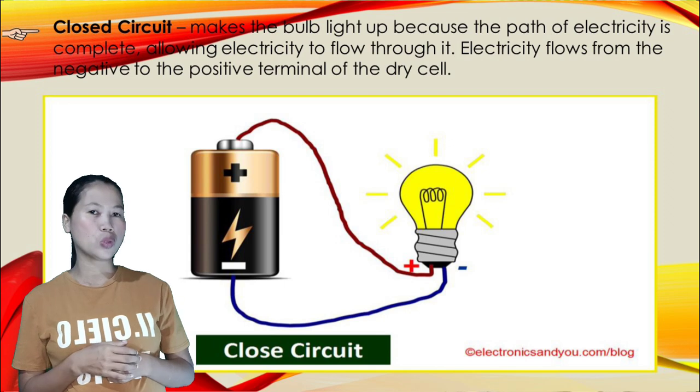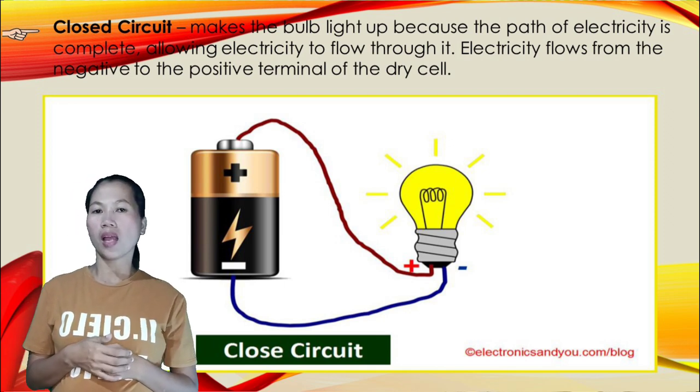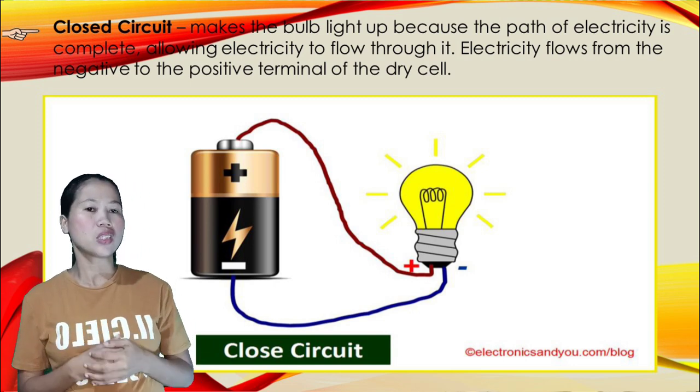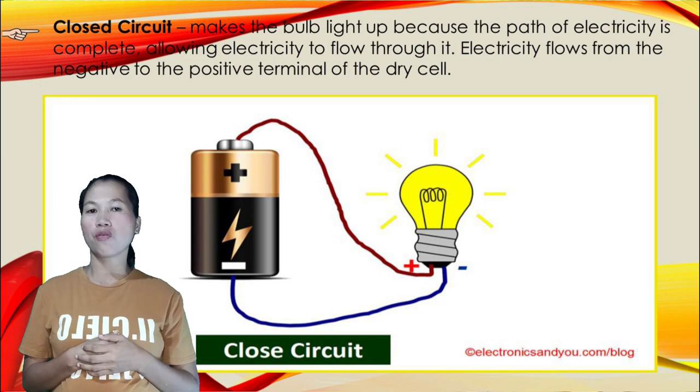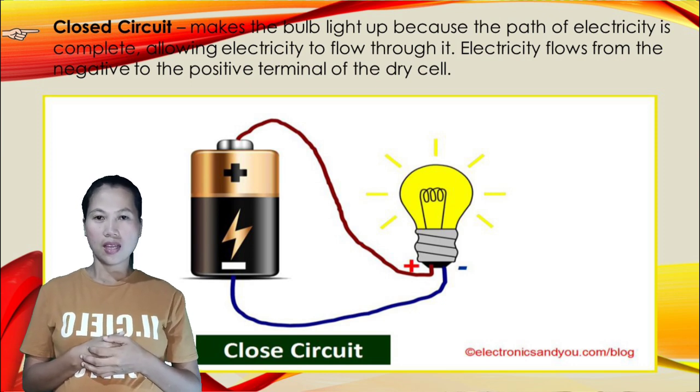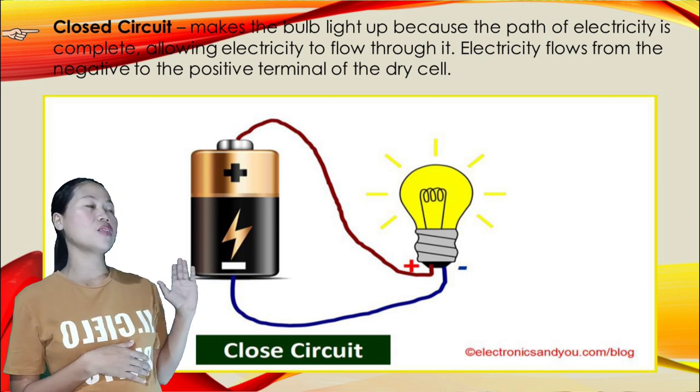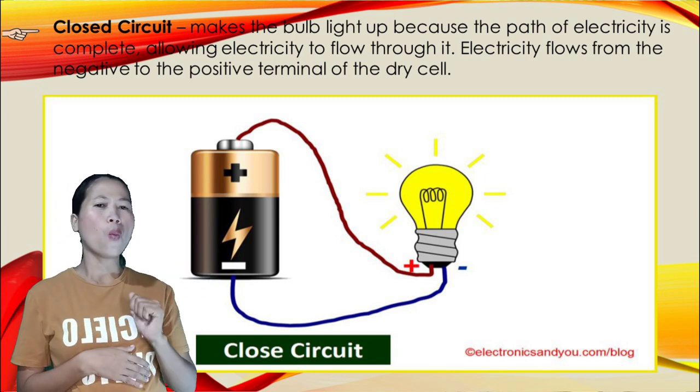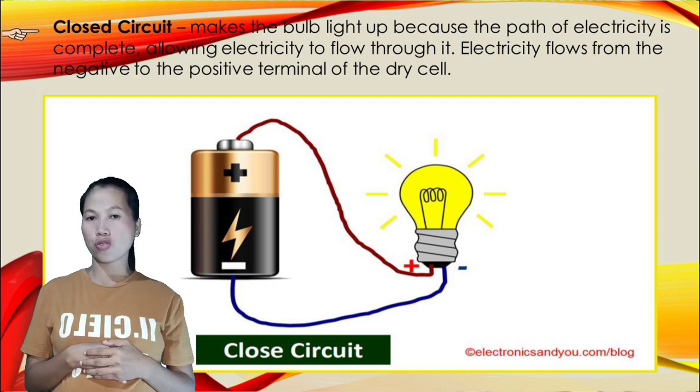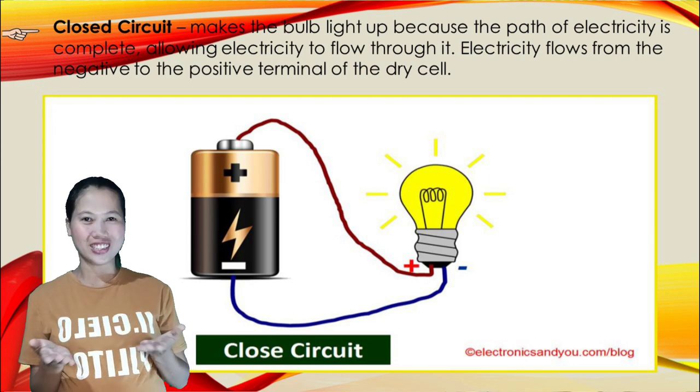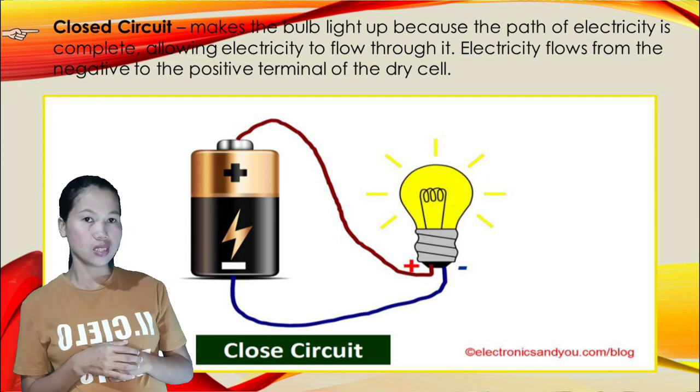What do you mean by closed circuit? Closed circuit makes the bulb light up because the path of electricity is complete, allowing electricity to flow through it. Electricity flows from the negative to the positive terminals of the dry cell. What happens to the bulb after you connect the light switch to the wire? Very good! The bulb lights up when the switch was connected to the wire.